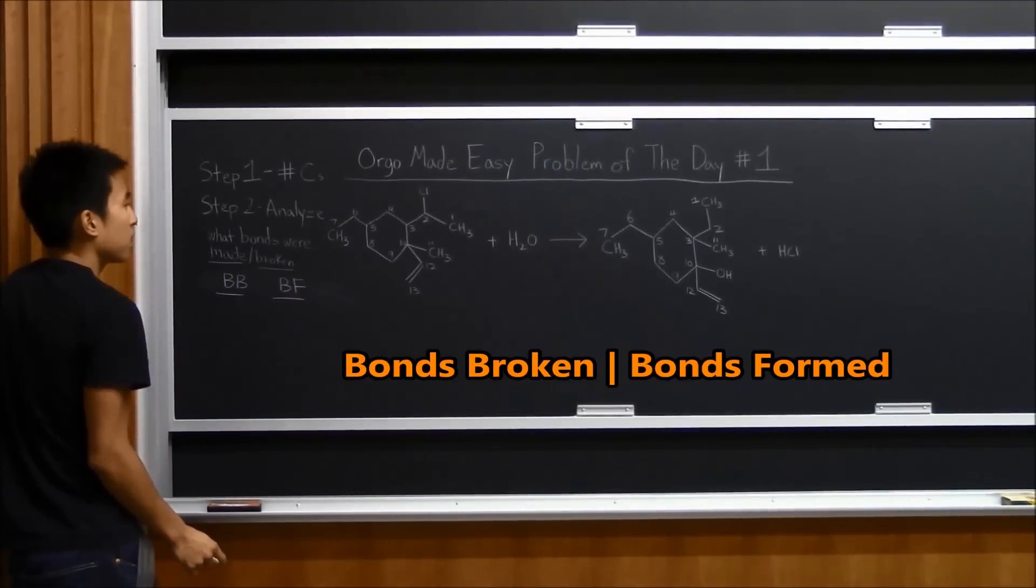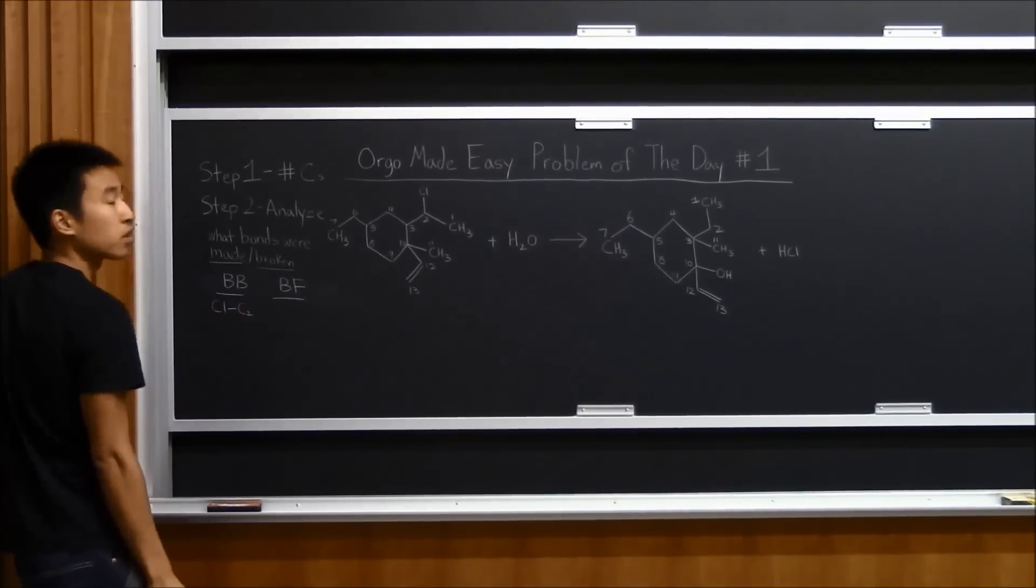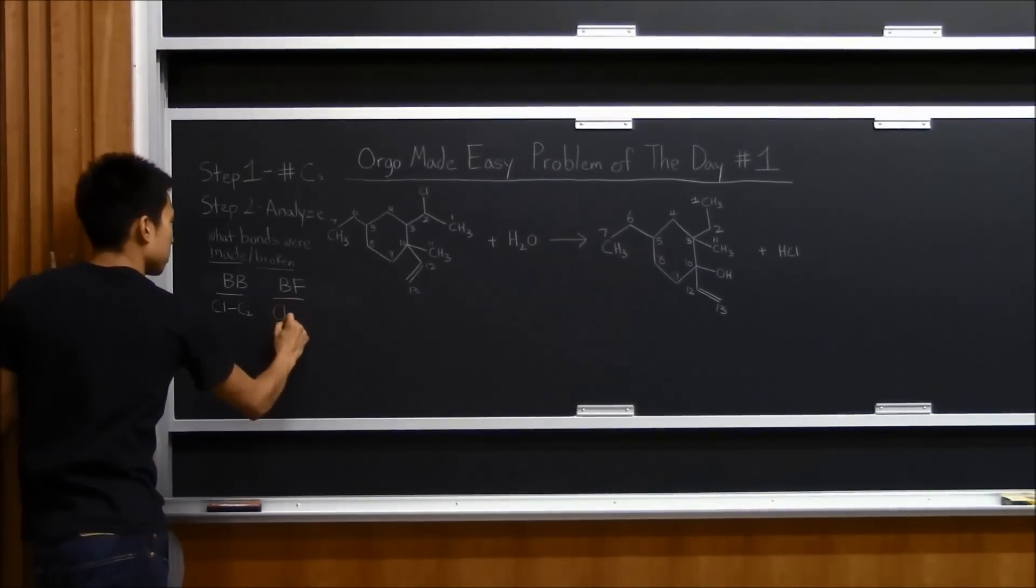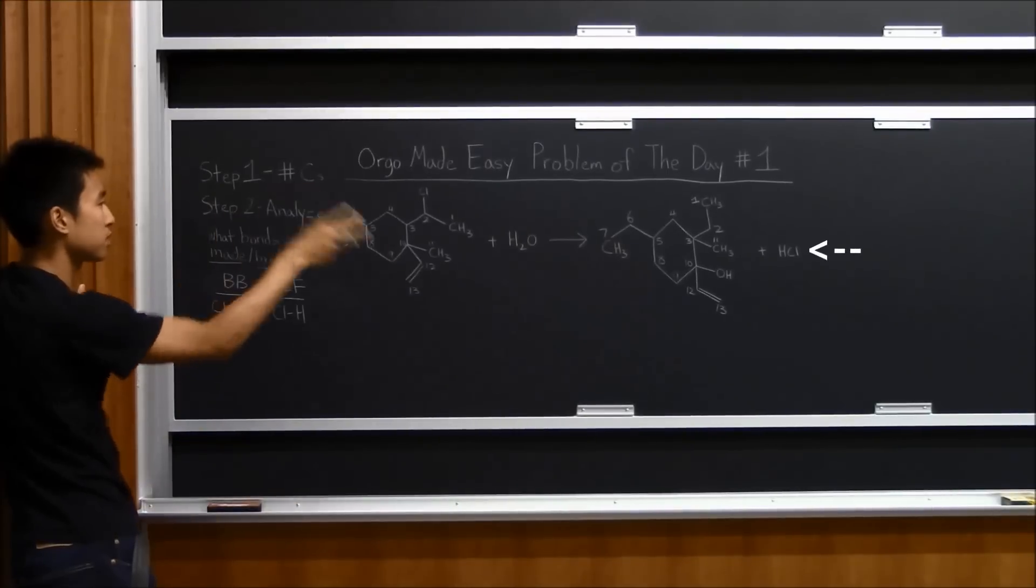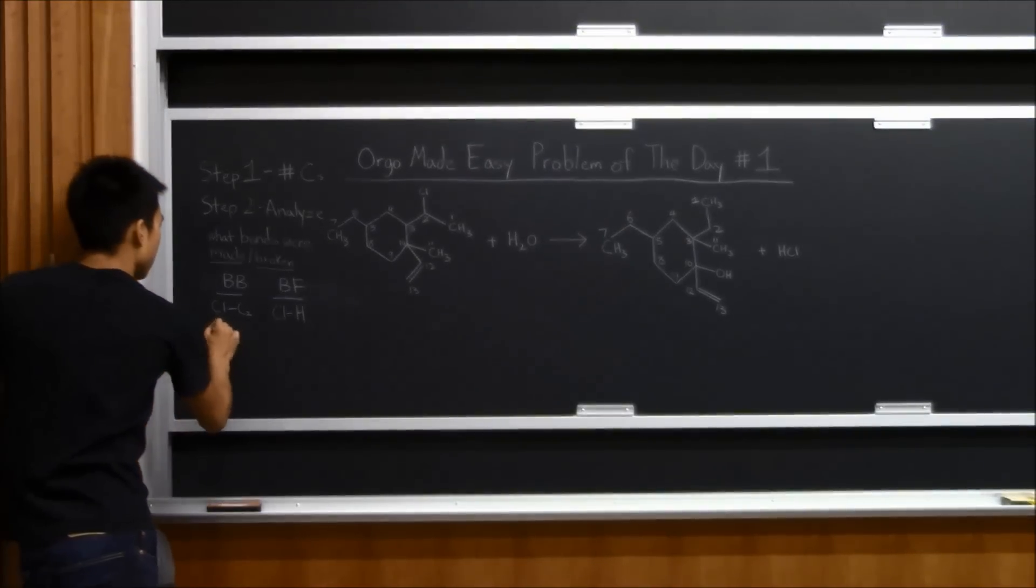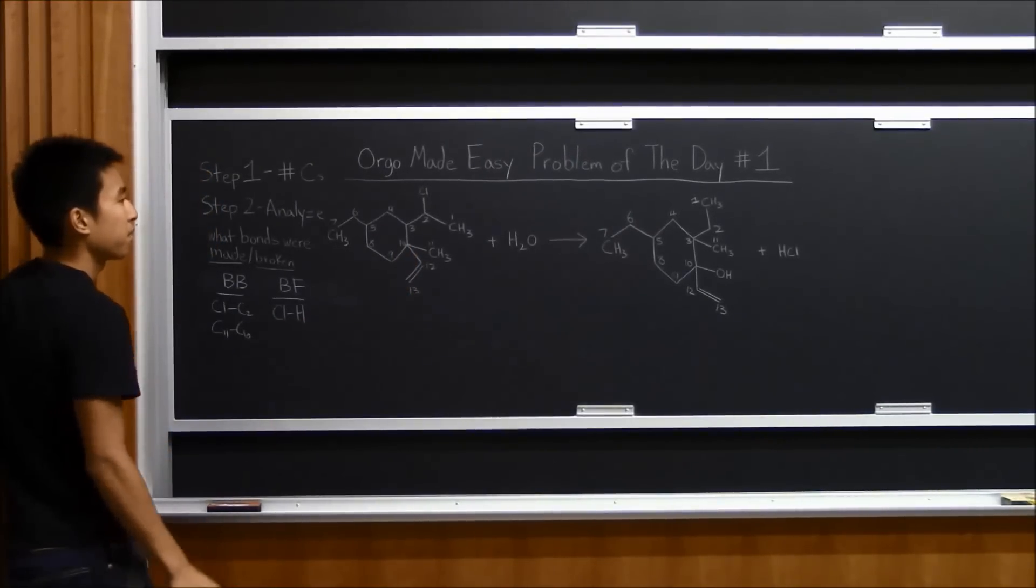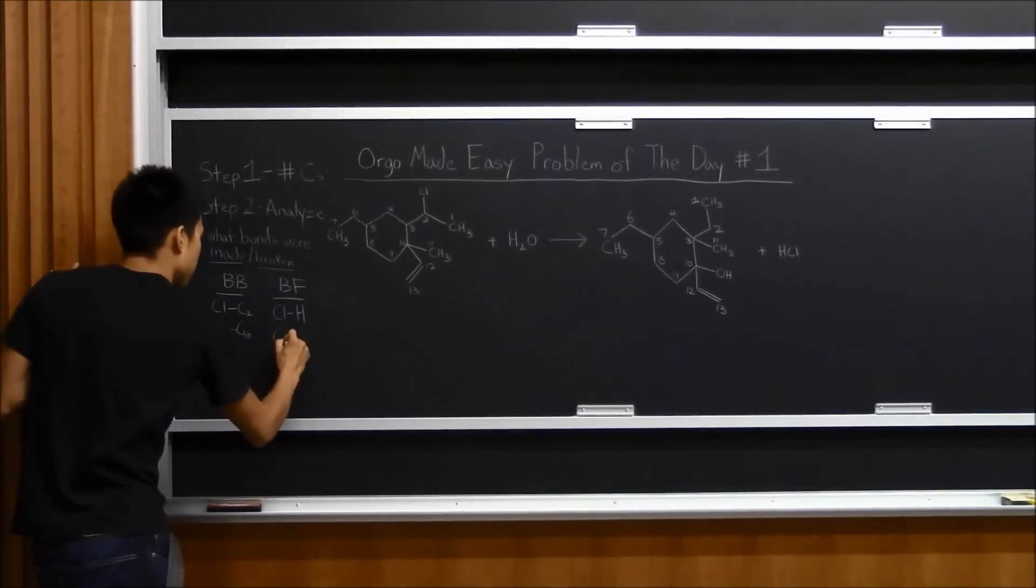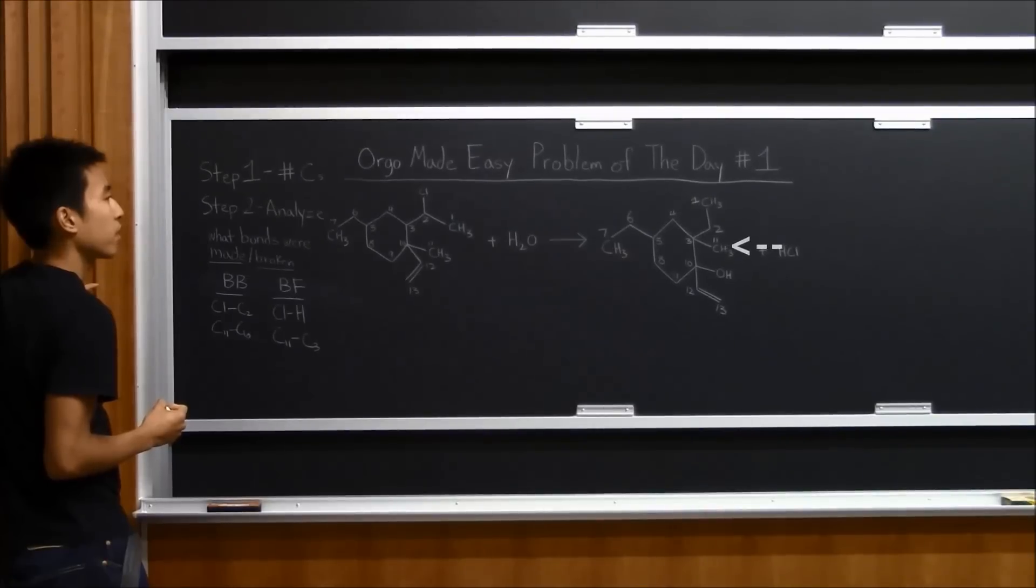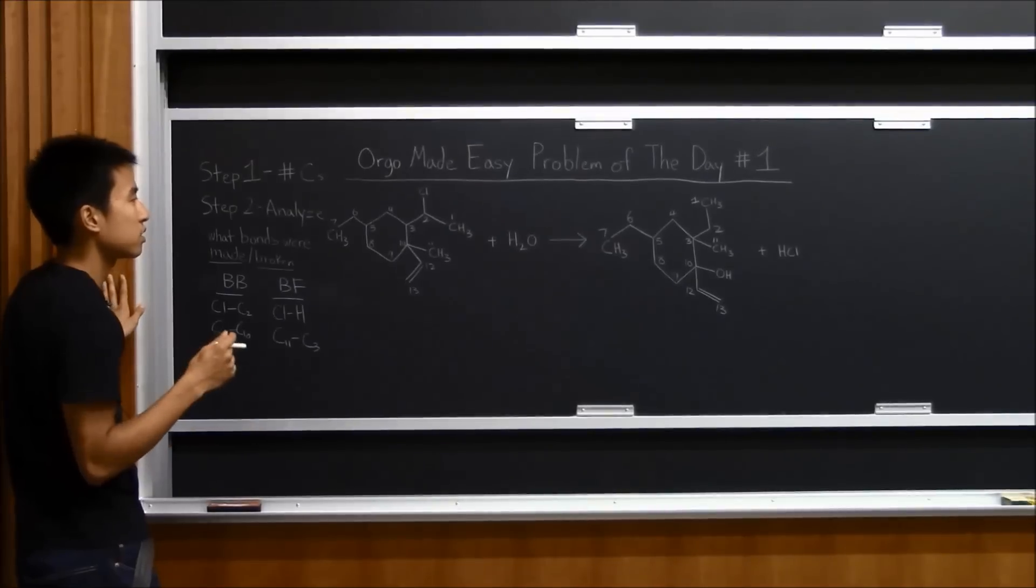So bonds broken, we have a Cl to carbon 2 bond that broke over here. And then we made a Cl to hydrogen bond. So that's there. What else? What other bond broke? Alright, I see that carbon 11 to carbon 10, that bond right here, broke. And then carbon 11 formed a bond with carbon 3. Okay? And then that's really all you can really see from here, I think.